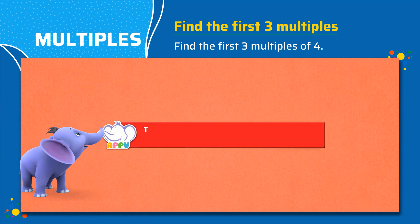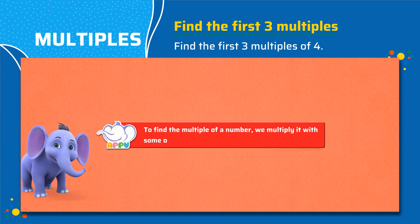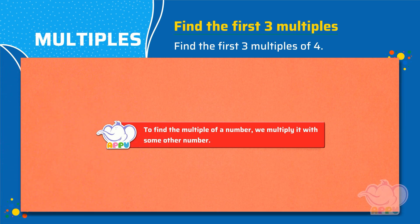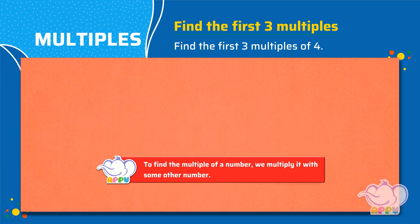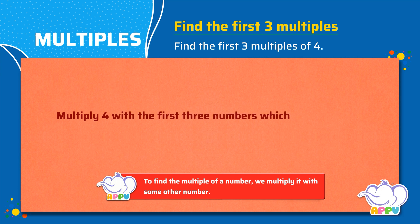To find the multiple of a number, we multiply it with some other number. In this case, we will have to multiply 4 with the first three numbers, which are 1, 2, and 3.